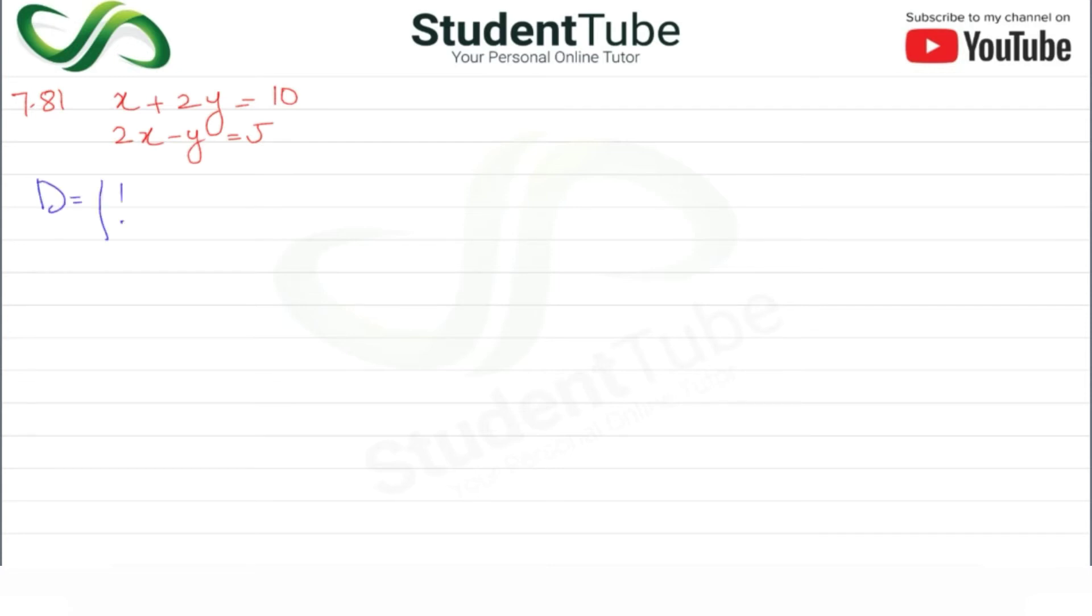First we write D. What is D? We have 1, 2 - where a1 is 1, b1 is 2, a2 is 2, and b2 is minus 1.